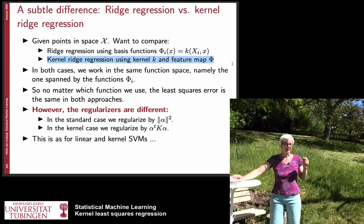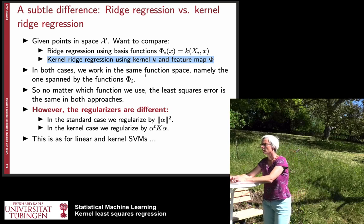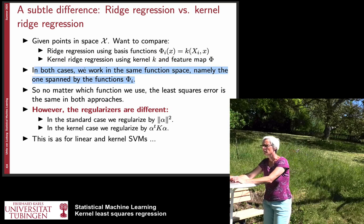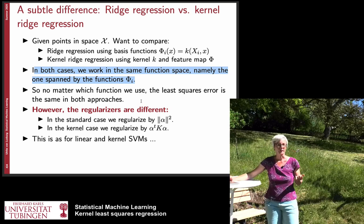And there is one little subtle difference which concerns the regularization term. So we work in the same function space namely the one spun by these functions phi or the kernel functions in this case. So the least squares error is also the same in both approaches.